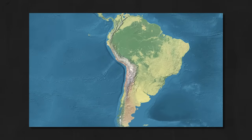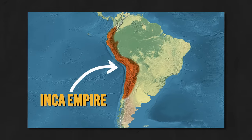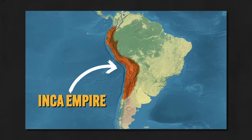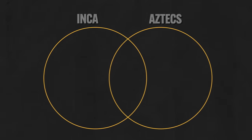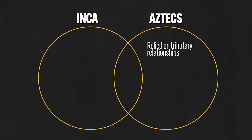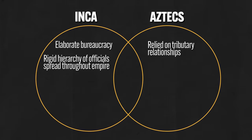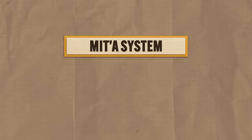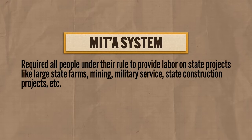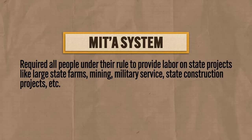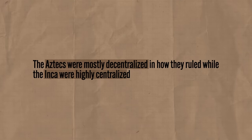The other major center of population in the Americas was in the Andean civilizations. In the early 1400s, the Inca Empire was born, stretching nearly across the entire Andean mountain range. Like the Aztecs, the Incas incorporated the land and languages of older Andean societies. To maintain power, the Incas were far more intrusive in the lives of conquered peoples than the Aztecs were. The Aztecs mostly stayed out of their subjects' business as long as tribute was sent. The Incas, however, developed an elaborate bureaucracy with rigid hierarchies of officials spread throughout the empire. The Incas adopted the Mita system, which required all people under their rule to provide labor on state projects like large state farms, mining, military service, or construction. To summarize: the Aztecs were mostly decentralized in how they ruled, while the Inca were highly centralized.